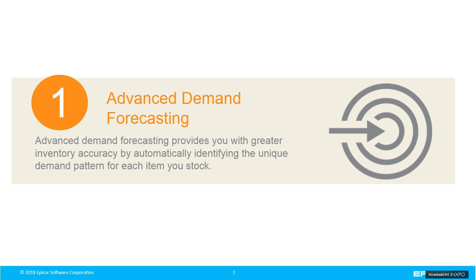Tony, I've heard the term advanced demand forecasting. What does that actually mean to a distributor? Thanks, Ruth. Let me start by explaining what forecasting is, because often when we're showing people our software or working with distributors, some people jump ahead and think about how you generate a purchase order or automatic replenishment. Forecasting is trying to predict how much of a given item you're going to sell over any given time period. There are lots of ways to get to that.